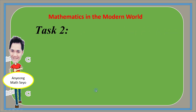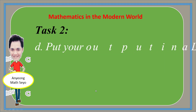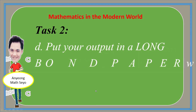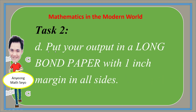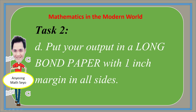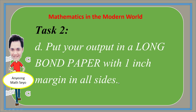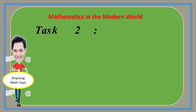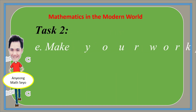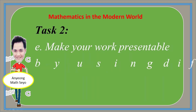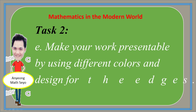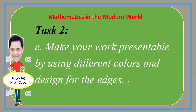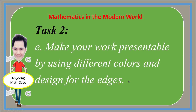For Letter D of Task 2, put your output on a long bond paper with one-inch margin on all sides. For Letter E, in order to get a high score, make your work presentable by using different colors and designs for the edges, and use straight edges for a clean and beautiful output.